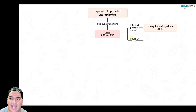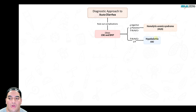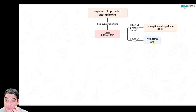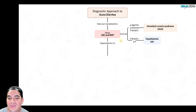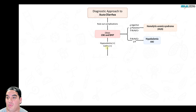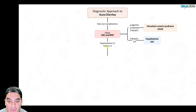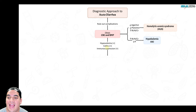If you see high BUN and creatinine with low potassium, that indicates hypokalemia from impaired potassium absorption and signs of hypovolemia causing poor renal perfusion. Only in specific high-risk scenarios should you obtain a stool analysis.